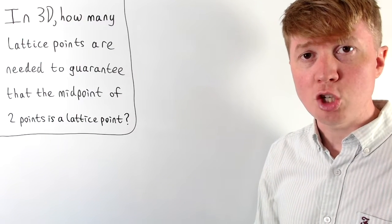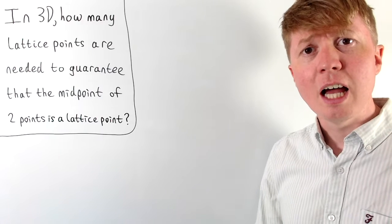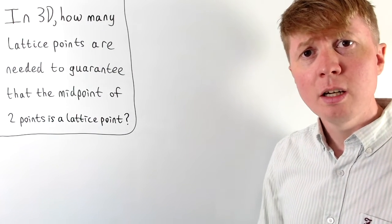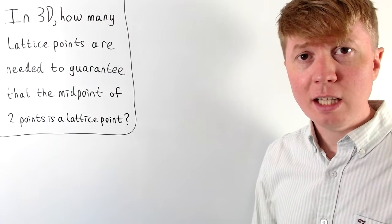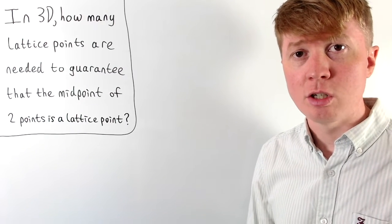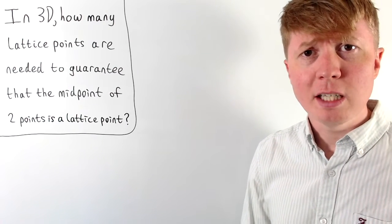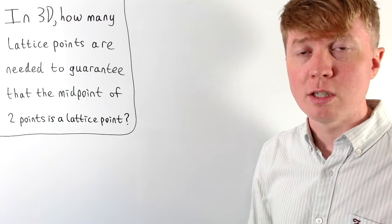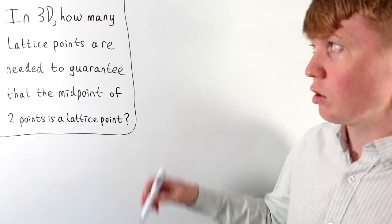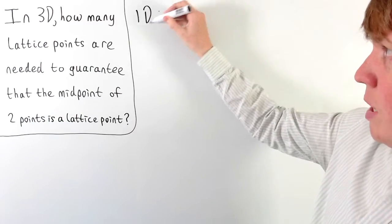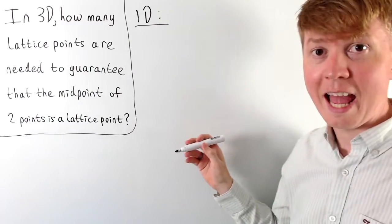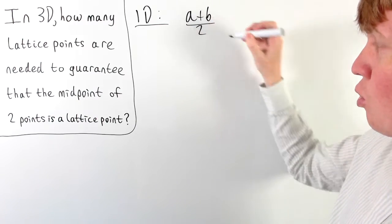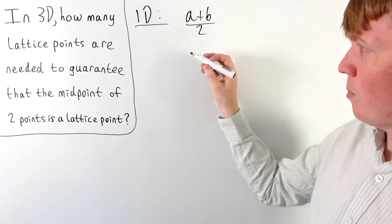We'll solve this problem by first considering it in 1D, building up to 2D, and then 3D, and at the end we'll also consider the n-dimensional case. Working in one dimension, the analogous problem would be picking integers — how many integers do we need so that the midpoint between a pair of our integers is also itself an integer? In 1D, the midpoint between two integers a and b is just (a + b) / 2.